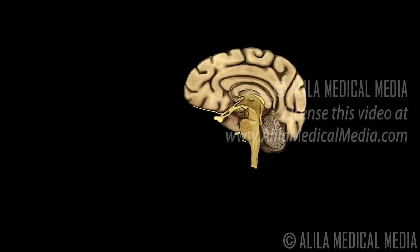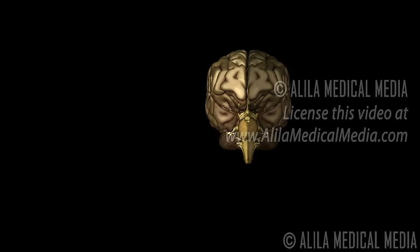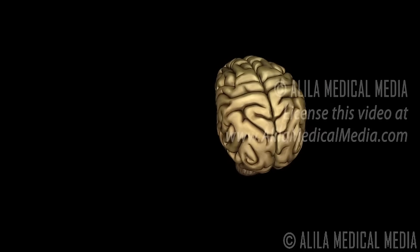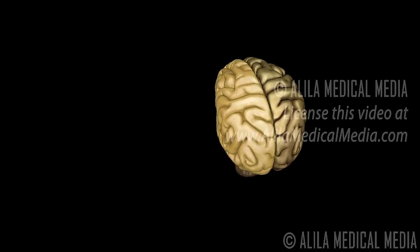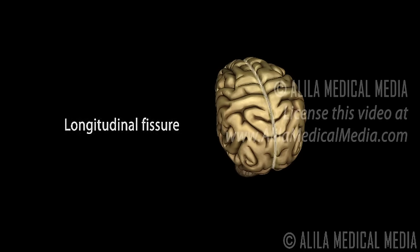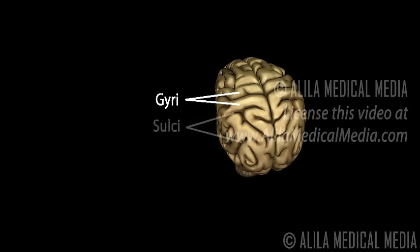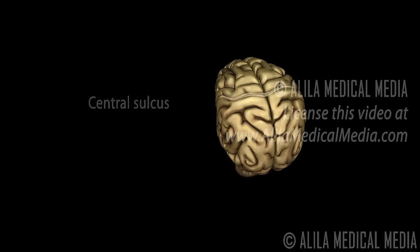The cerebrum consists of two cerebral hemispheres. The left hemisphere controls the right half of the body, and the right hemisphere controls the left half of the body. The two hemispheres are separated by a deep groove called the longitudinal fissure. Each hemisphere has a number of folds called gyri, separated by grooves called sulci.